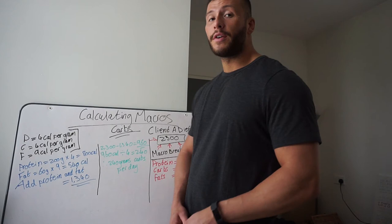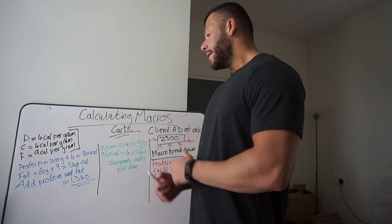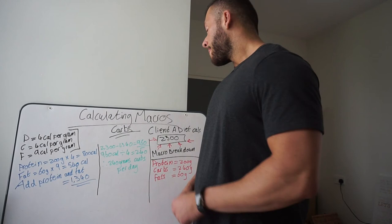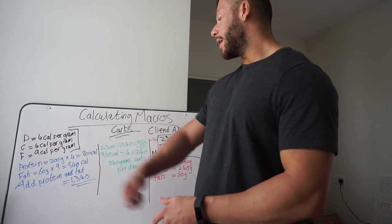So moving on to our carbs. In order to find our carb macro breakdown, we're going to take our dieting calories, which is 2300, and subtract 1340 calories of protein and fat. This gives us 960 calories of carbs.